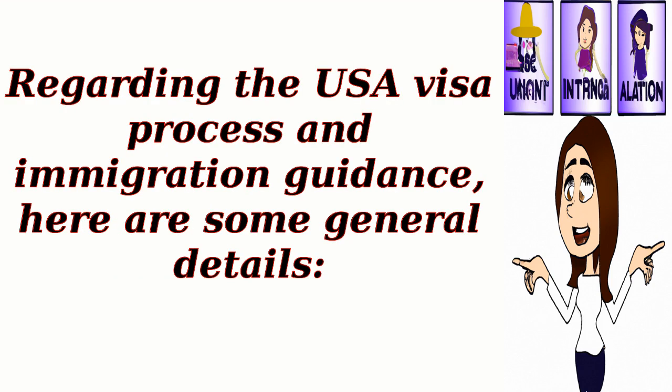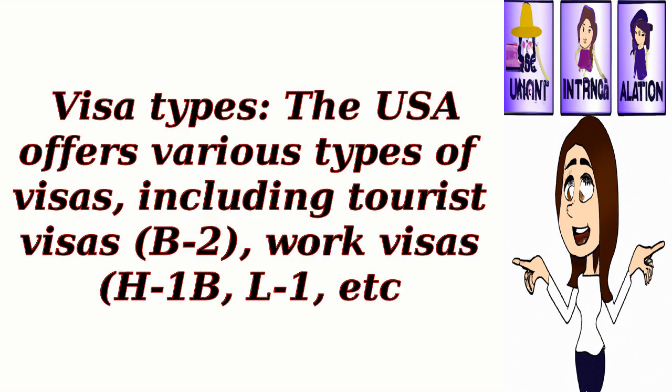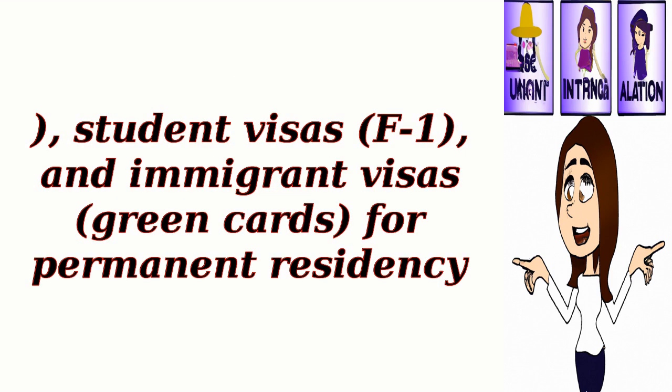Regarding the USA visa process and immigration guidance, here are some general details. Visa types: The USA offers various types of visas, including tourist visas (B2), work visas (H1B, L1, etc.), student visas (F1), and immigrant visas such as green cards for permanent residency.